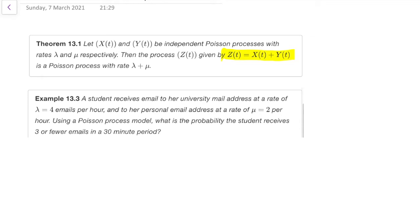So here's an example to show how this works. A student receives email to her university email address at rate lambda equals four emails per hour, and to her personal email address at rate mu equals two per hour. Using a Poisson process model, what's the probability that the student receives three or fewer emails in total in a 30-minute period? So I think it's clear here that we want to look at the total number of emails received. So the total number of emails received follows a Poisson process with rate the sum of those two rates, four plus two equals six. So in other words, the total email process is a Poisson process with rate six.